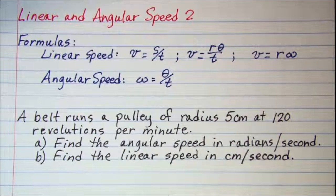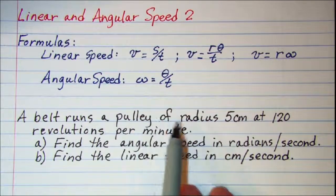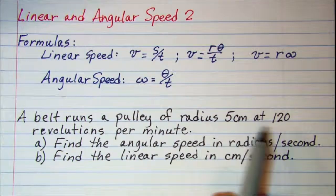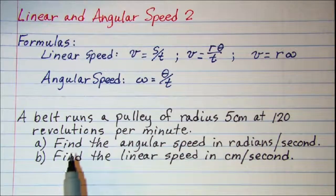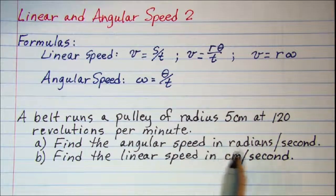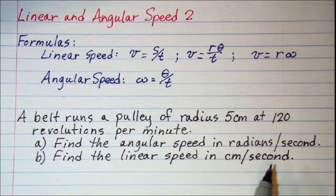The problem that we'll be working is: a belt runs a pulley of radius 5 cm at 120 revolutions per minute. We're asked to find the angular speed in radians per second and the linear speed in centimeters per second.